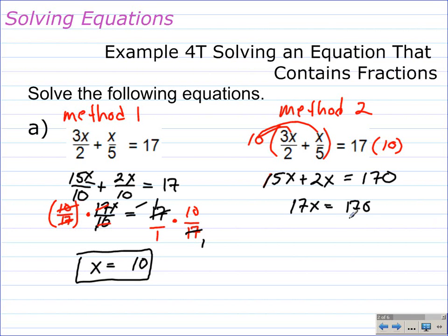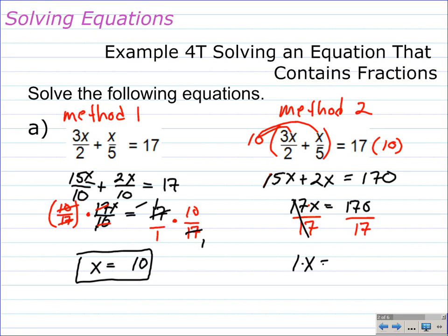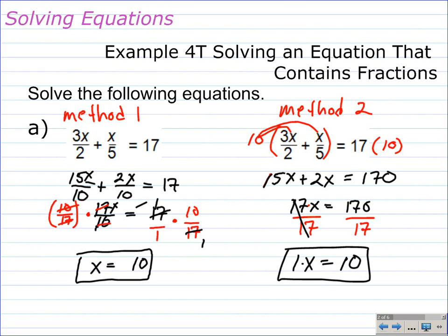Next, we divide each side by 17. The reason we divide by 17 is because it's 17 times x — the opposite of multiplication is division. On the left-hand side, the 17s divide out: 17x divided by 17 leaves us with 1x, being equal to 170 divided by 17. When we simplify this arithmetic, that gives us 10. So we have two methods, and it's up to you how you want to solve it. Either way, you can do it. You can also enter this into a calculator — that would be a third method.